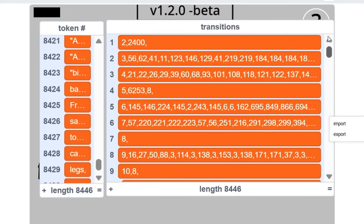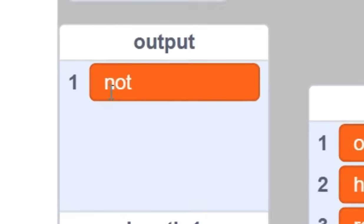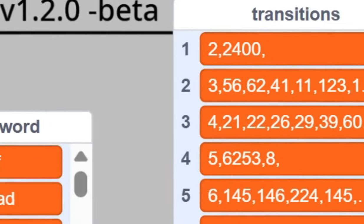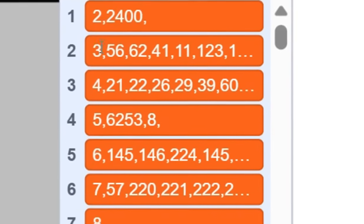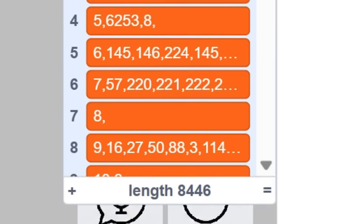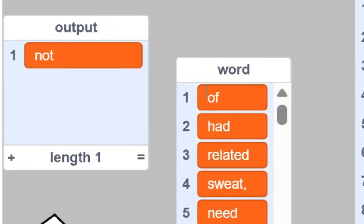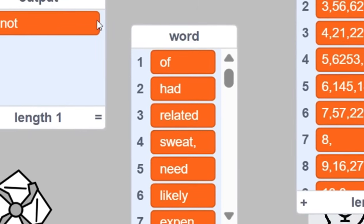So that is basically how my AI is going to predict things. So now that we have data of every single word and every word that comes after it, if we have the word not, we can find it in the transitions list and then decode the item. And so if we have the word not, all the words that come after are of, had, related.